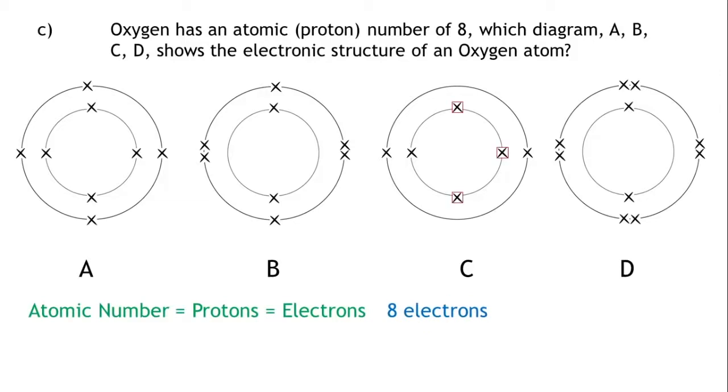We can therefore eliminate diagram C, as it only has six electrons. We can also eliminate diagram D, as it has ten electrons.